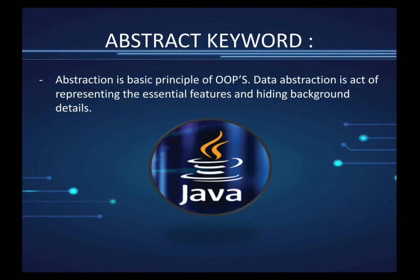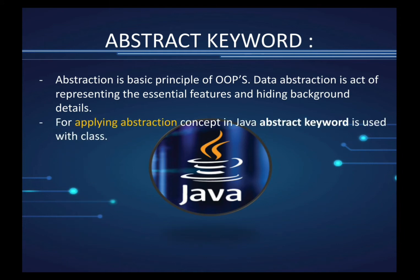Abstraction is a basic principle of OOP. Data abstraction is the act of representing essential features and hiding background details. To apply this abstraction concept in Java, the abstract keyword is used with a class.